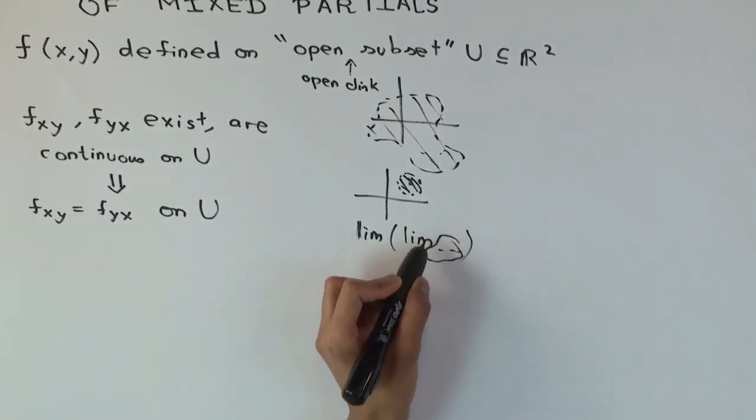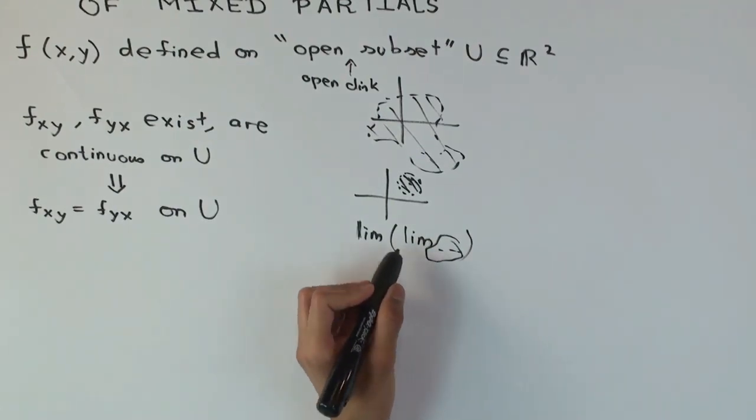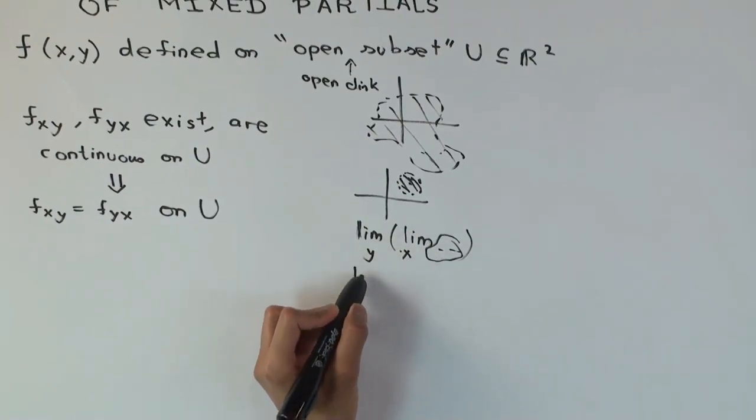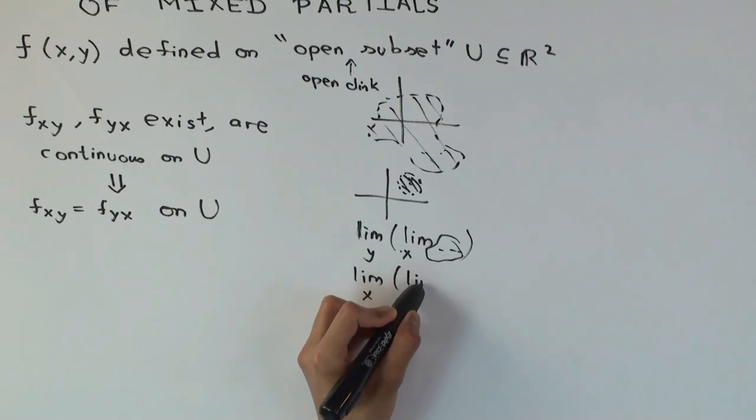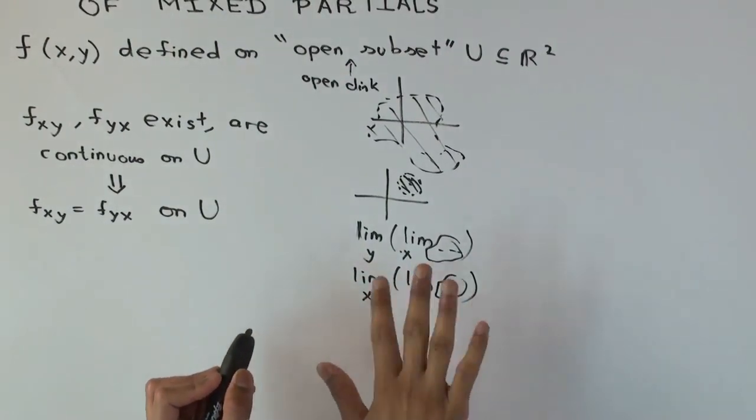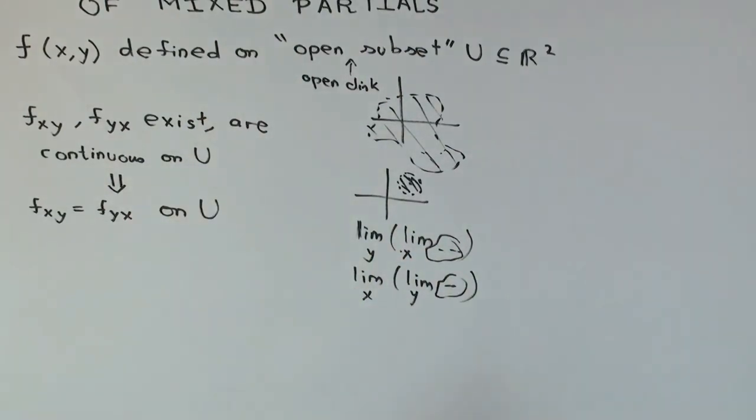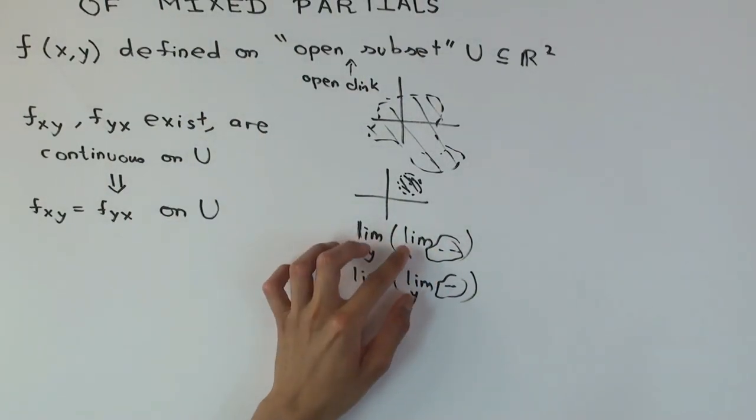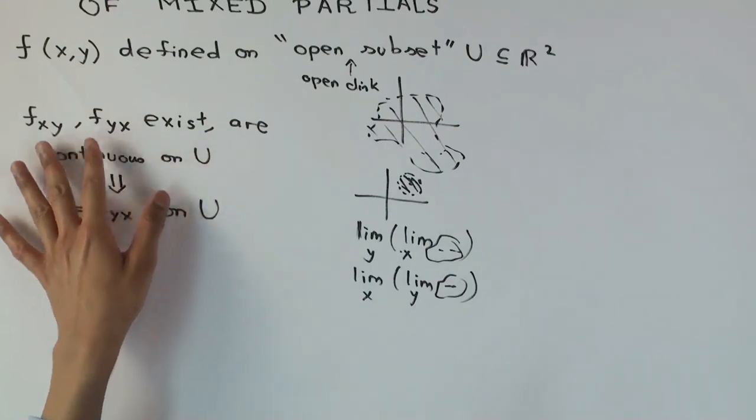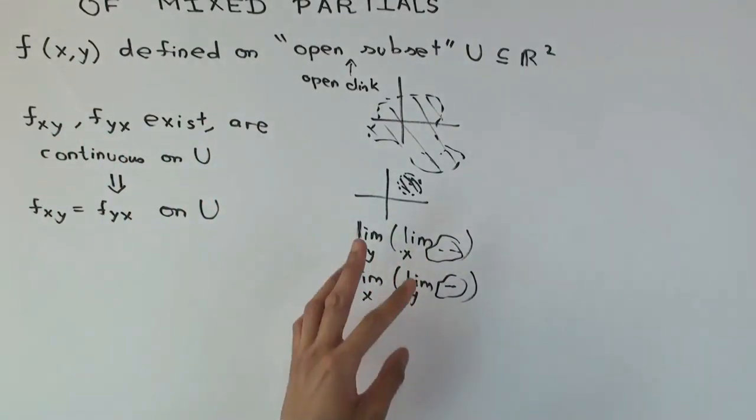One limit will be as x approaches x naught, the other as y approaches y naught. The actual expression would be the same for f_xy and f_yx, but in one you'll have your x limit on the inside, and in one you'll have your y limit on the inside.